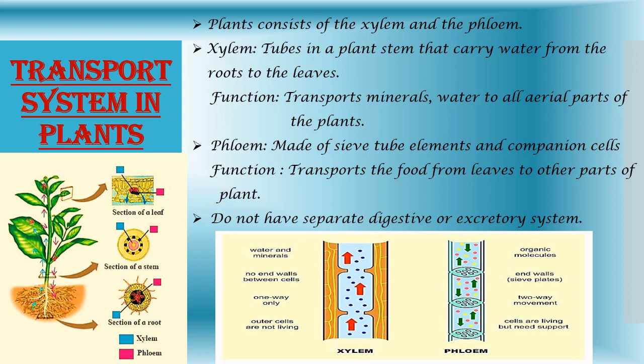Phloem is made of sieve tube elements and companion cells, and it helps to transport the food — that is, glucose — from the leaves to other parts of the plant where it is either consumed or stored. Plants have a transport system but they do not have a separate digestive or excretory system.